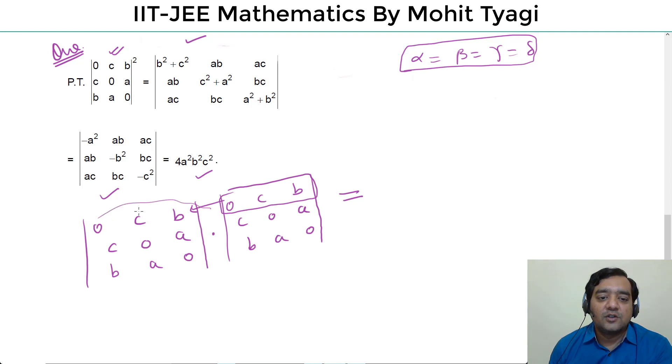So 0 into 0, c into c, b into b. The first element is c square. Then this is multiplied by 0, so the first element and second element don't come. The third element is a into b, that will be ab. The third element of 0 is multiplied by the first 0 and third 0, so the second element is ac.